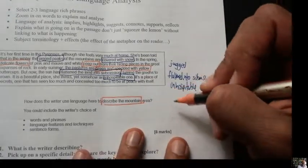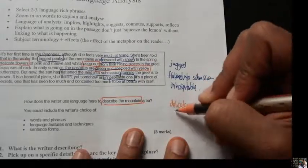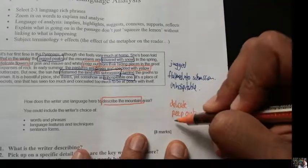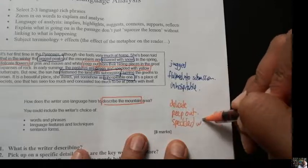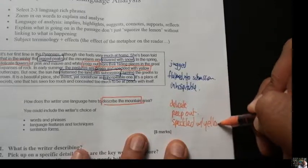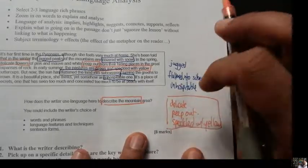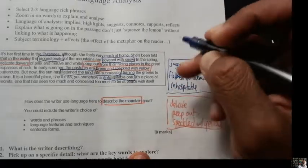In contrast, we have delicate, peep out, speckled with yellow. And what we essentially see are these positive words contrasting with these. That's fine.